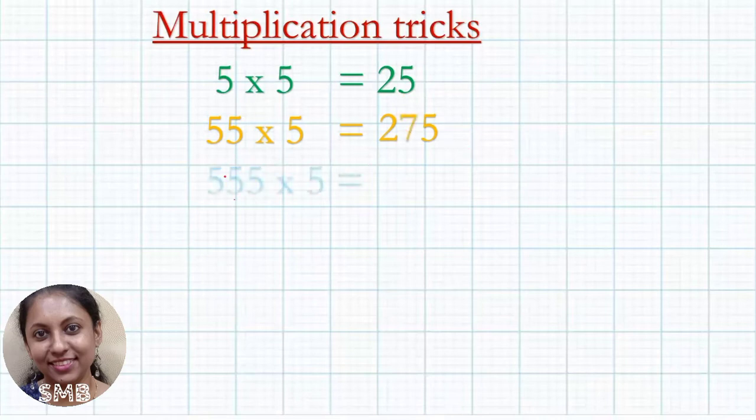Then what is 555 into 5? Same way, first 2 you can write, last 5, and in the middle see here in the multiplicand 3 fives are there, so 3 minus 1, 2 sevens you should write in the middle. Here first 2 fives, then 1 seven will come here.